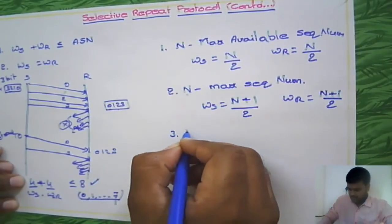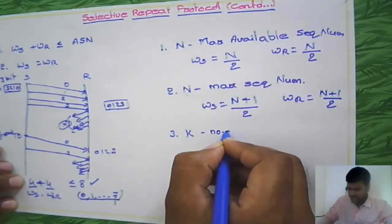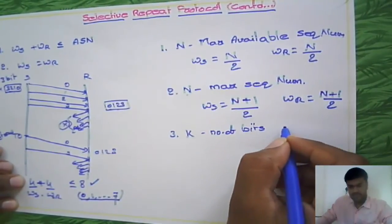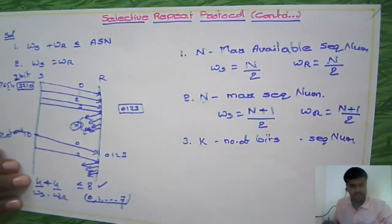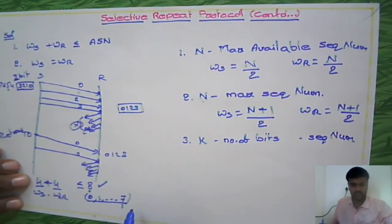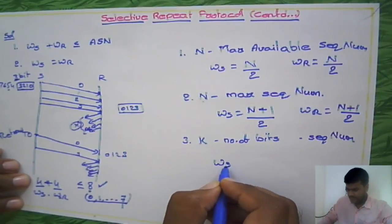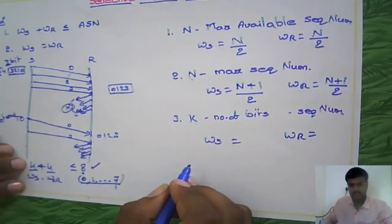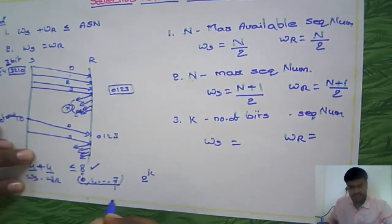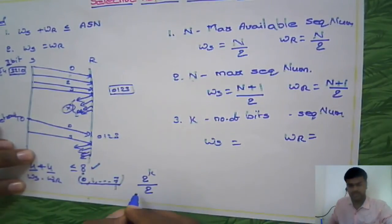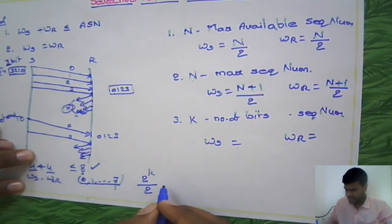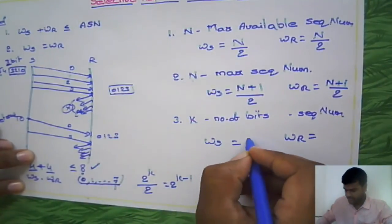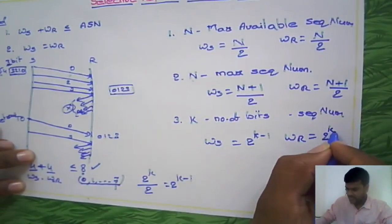Case 3: suppose k is the number of bits used for sequence numbers. Here we used 3 bits, giving 8 sequence numbers. With k bits, 2 raised to k sequence numbers are possible. Half of that is the window size of sender and receiver. Half of 2^k equals 2^(k−1). So window size of sender and window size of receiver both equal 2 raised to k minus 1.